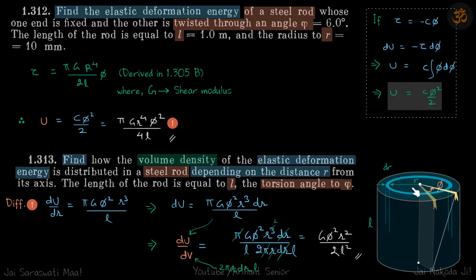It is quite obvious that as you go away from the center, the energy stored is going to be higher and higher, because the material is being twisted more and more as you move away. That is why the elastic energy stored is not a constant. We already got a result in terms of r⁴ for the total energy, confirming that energy is a function of r — not independent of r even when length and phi are known.